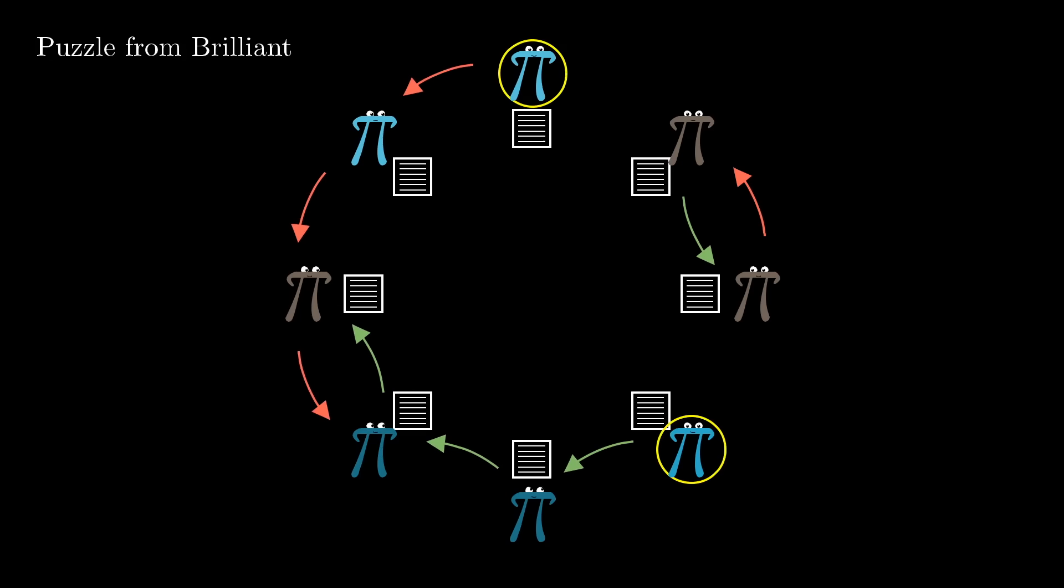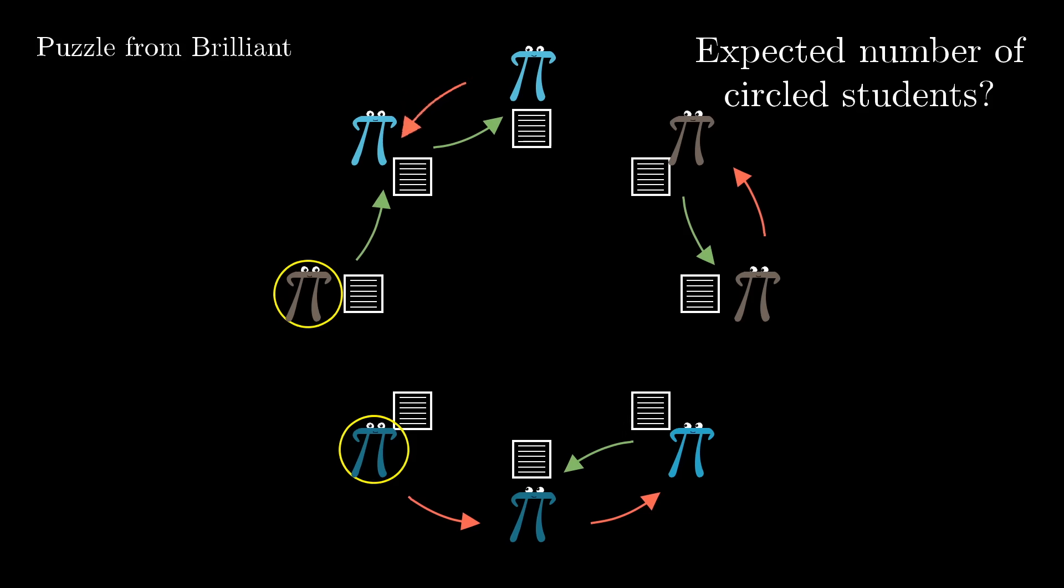Now, circle all of the students that don't have somebody cheating off of their test. What is the expected number of such circled students? It's an interesting question, right?